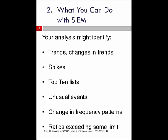Sometimes you'll look at something and say that can't be right — the measurement has to be wrong. And you start looking at the underlying factors and what is actually going on, and you discover there was something very unusual, and you're very glad you learned it. You might identify changes in frequency patterns, or you might find ratios exceeding some limit — confidence limits, or exception limits.